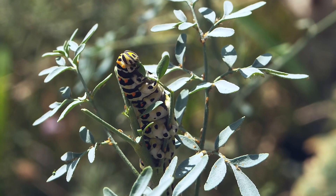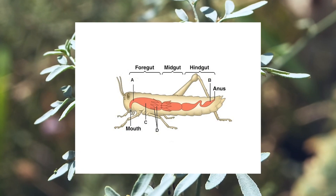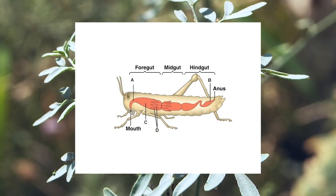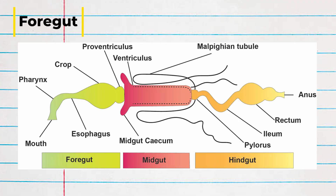The internal digestive system can be divided into three regions: the foregut, the midgut, and the hindgut. The foregut is specialized for food storage and predigestion. The foregut includes, in order, the salivary glands, the pharynx, the esophagus, and the crop.